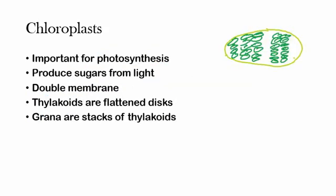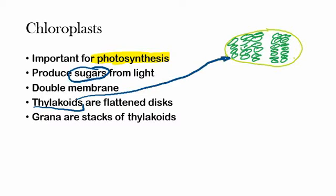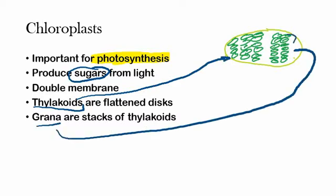Next we have chloroplasts. Like mitochondria, they're important for energy conversions, but in this case it's photosynthesis rather than cellular respiration. This process takes light — the energy from the sun — and uses it to produce sugars out of carbon dioxide and water. Those sugars are then used for energy in the cell. Like mitochondria, chloroplasts have a double membrane. For the anatomy, you have to know that thylakoids are these flattened discs, whereas grana are a whole stack of these discs. So know the difference between a thylakoid and a grana.